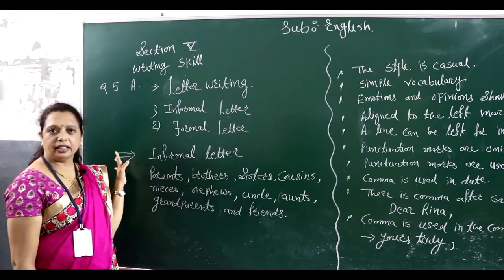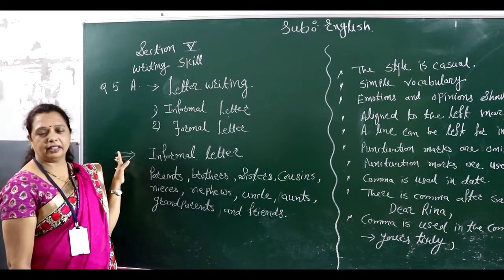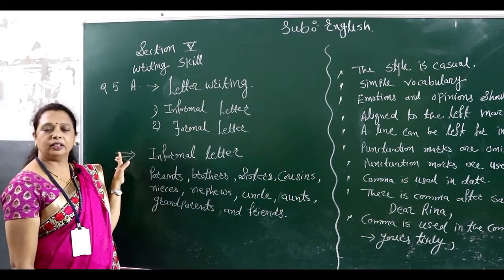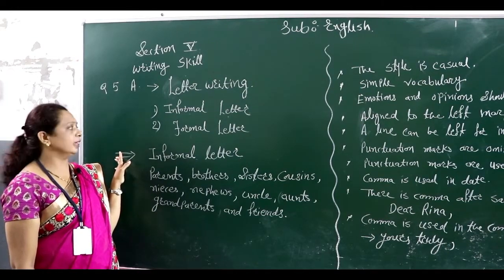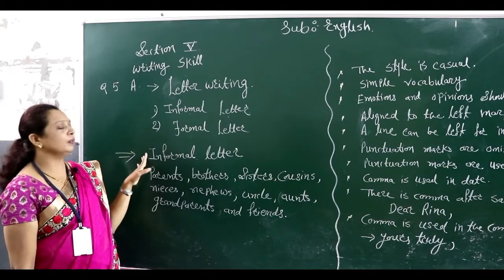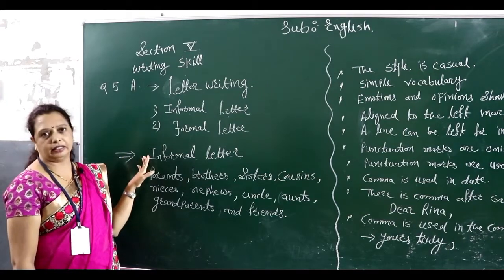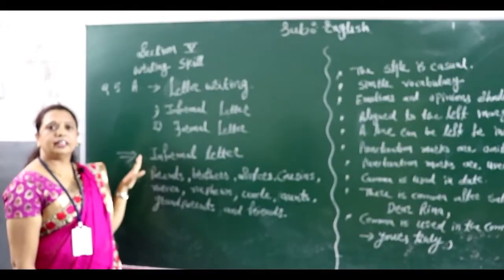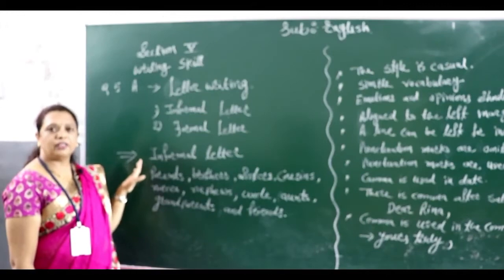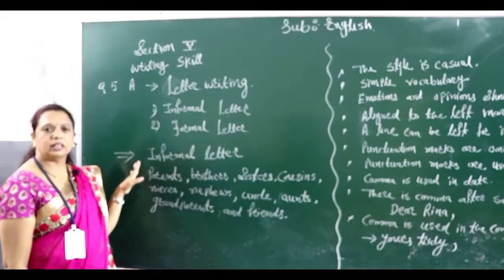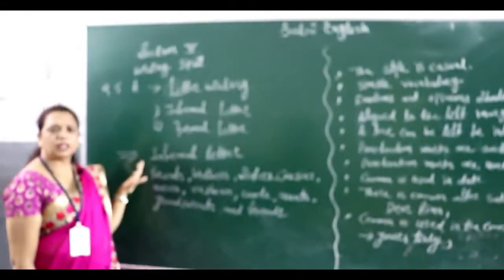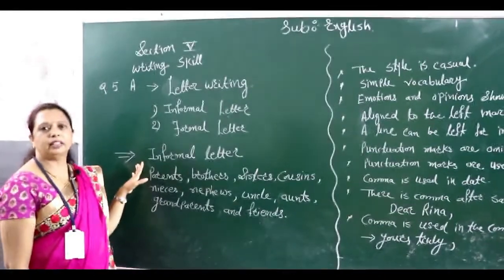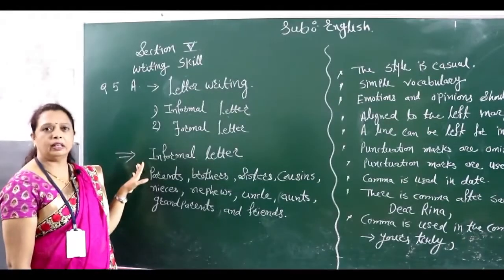The letter which we write to our parents, relatives, brothers, sisters, cousins, nephews, uncles, aunts, grandparents, and friends — the letter written to our near and dear ones — comes in the category of informal letter. Here we find that this question carries 5 marks, and there are some rules which we follow when writing the informal letter.